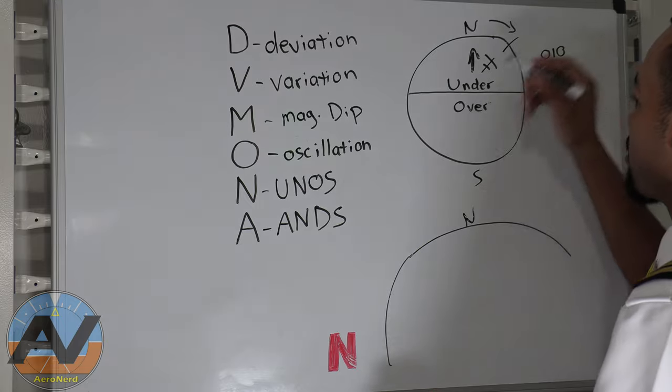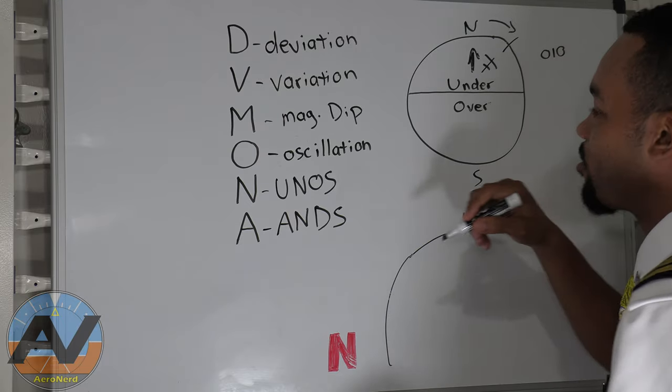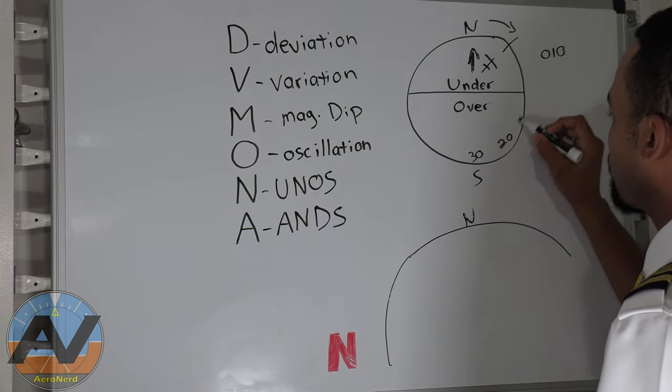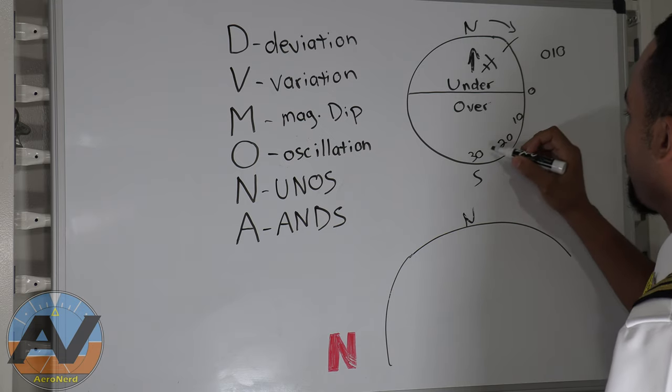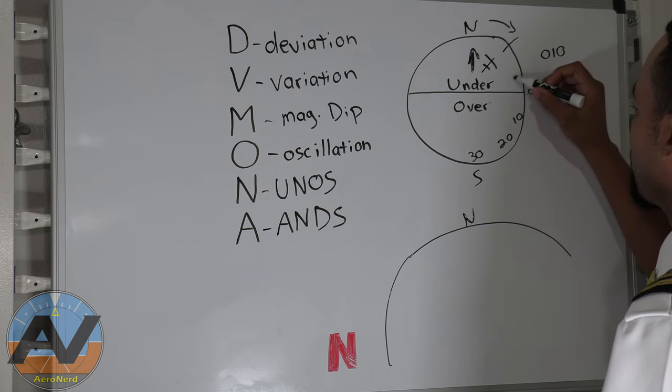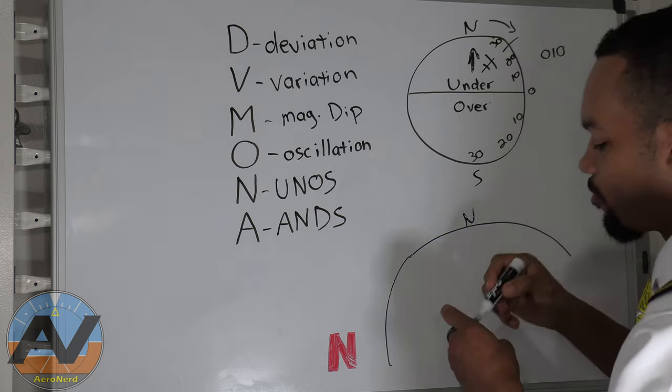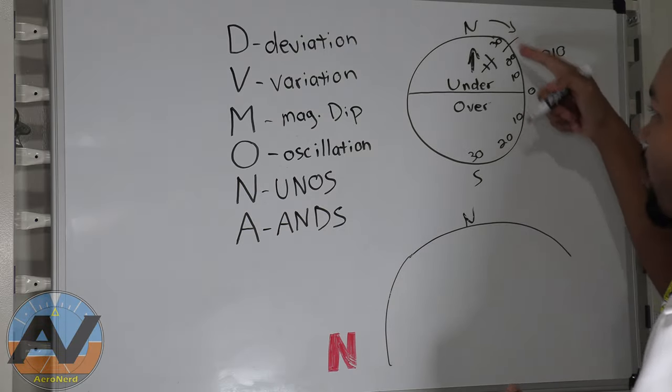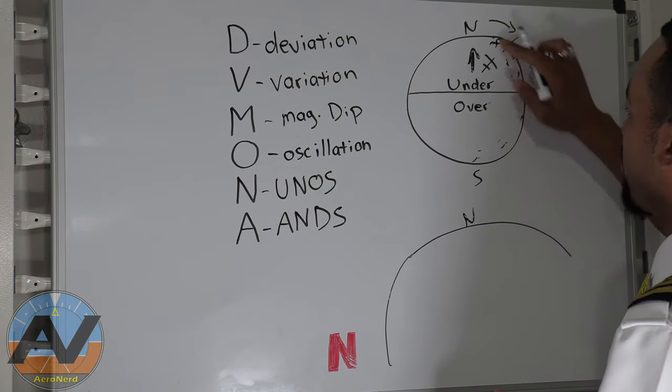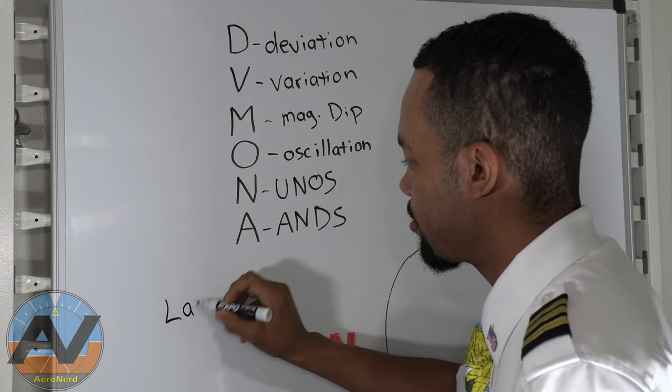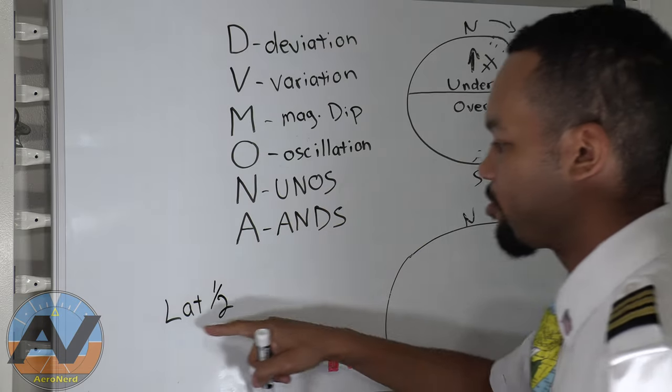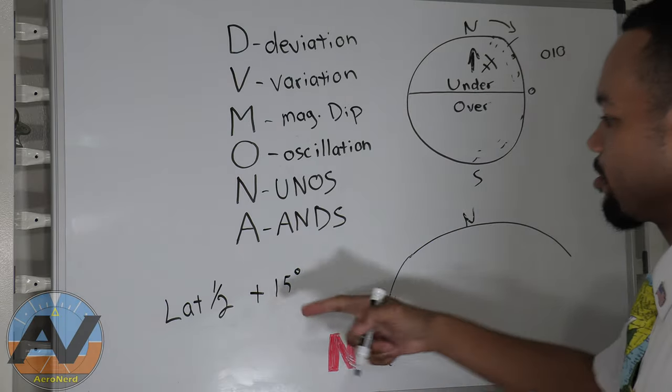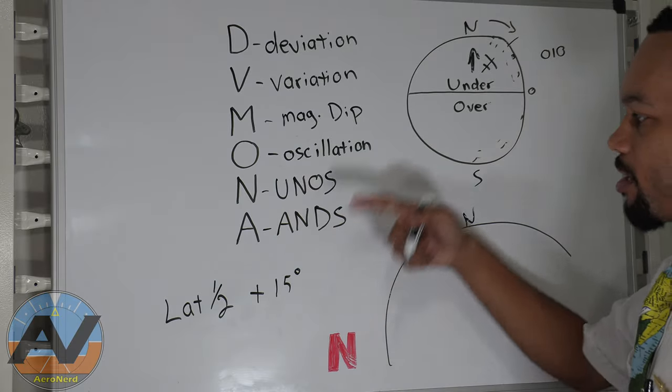Now, there are some other tips on how much do you overshoot or how much do you undershoot. You may see this: 30, 20, 10, zero. So you overshoot this many degrees based off the heading. And then the same thing up here, 10, 20, 30, and so on and so forth. So I don't really like using this method because this changes depending on what latitude that you're at. And how you can find this out is by doing a simple little equation here. It's your latitude, divide it in half, and then you add 15 degrees. So that's literally how you get how much you have to overshoot and undershoot.